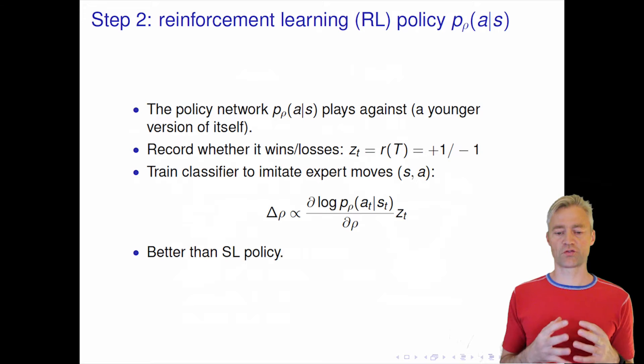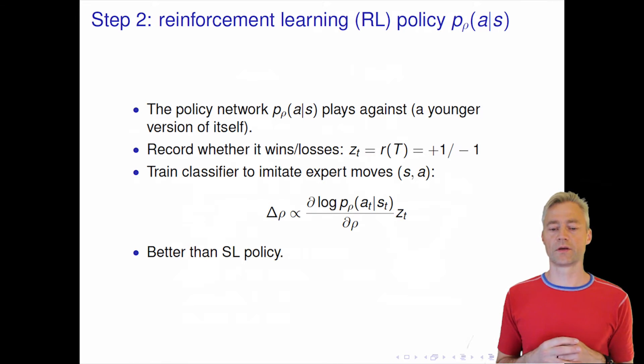This means that we will make higher probability for the actions that actually turned out to be a winning strategy and depress strategies that led to a loss. This turns out to get a stronger player than the supervised learning player, but we are not done yet. We cannot win against the world champion with the reinforcement policy model. We need to put something extra into the system.